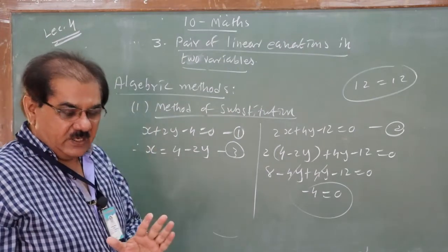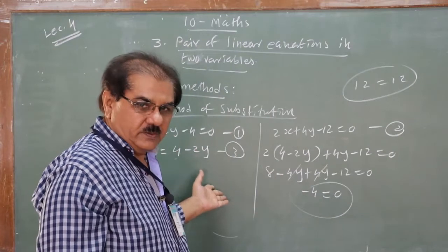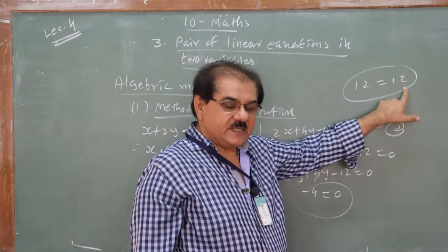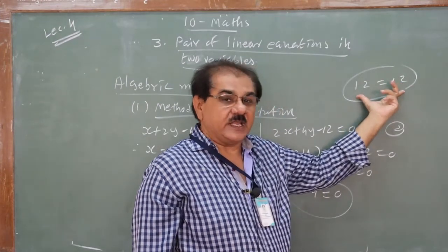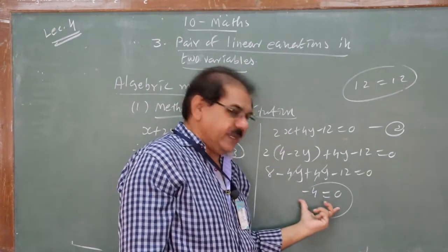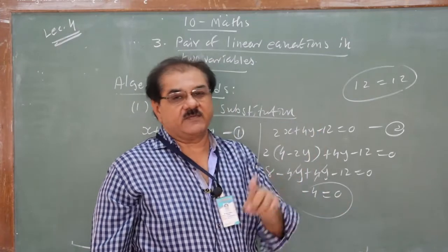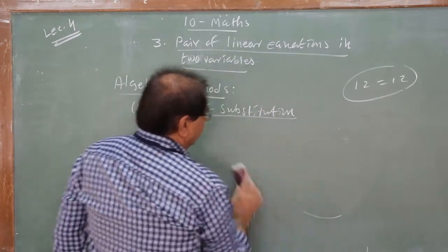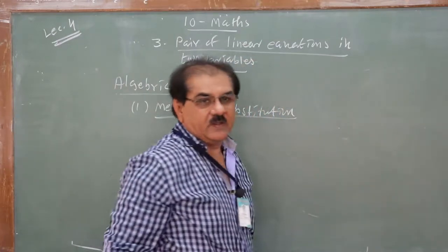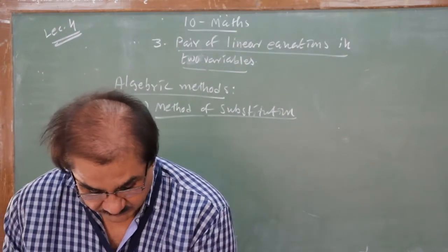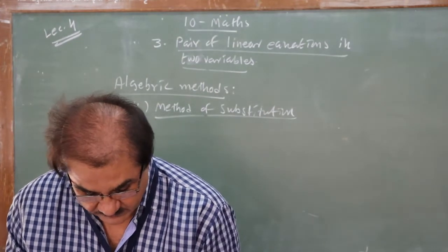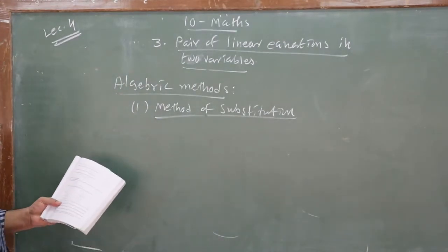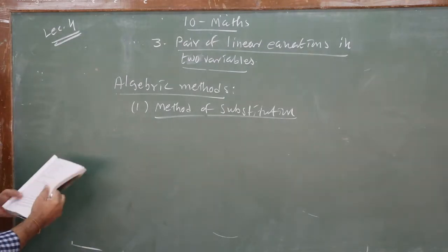So the general outcomes using method of substitution are: you get exact values of x and y (unique solution); or the variable disappears and the statement is true — infinitely many solutions; or the variable disappears and the statement is false — no solution. Remember these three outcomes. Now we move to Exercise 3.3 and take a few questions.